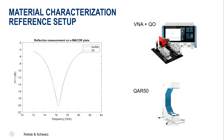The question is: how far is the QAR50 result actually from the super precise result obtained with the VNA quasi-optical setup? Looking at the curve on the left-hand side, we can see the QAR50 measurement in blue and the quasi-optical measurement in red. Within measurement tolerances, the QAR50 and quasi-optical measurement results are more or less completely identical. So for material characterization, we can use either the quasi-optical approach or the QAR50.